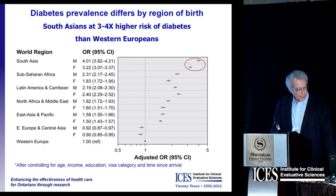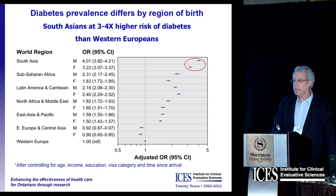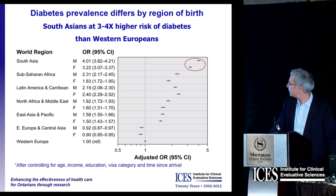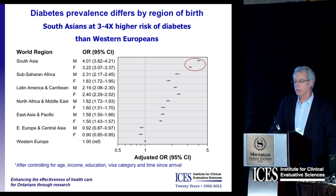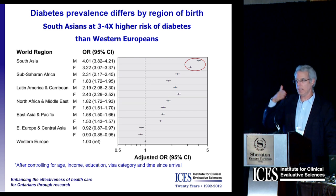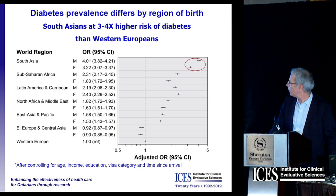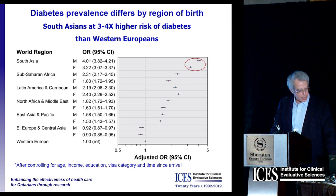Similarly, graduate student Marisa Creatore looked at diabetes risk and found that certain populations had enormous risks. She's also done interesting studies on incidence, finding we probably need to screen about 15 years earlier in some populations, like South Asians, than in others. Relative risks and odds ratios of between three and four are seen compared with Western Europe for diabetes.